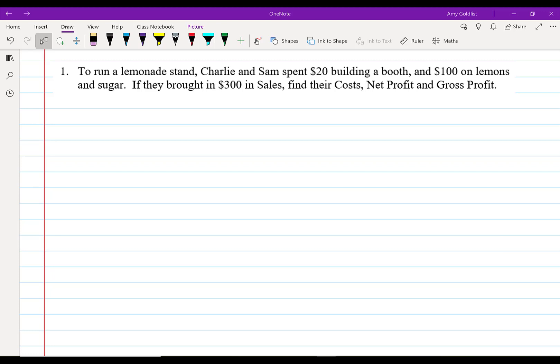To understand the different types of expenses and the different types of profits, we're going to go over an example. Example number one. To run a lemonade stand, Charlie and Sam spent $20 in building a booth and $100 on lemons and sugar. They brought in $300 in sales. Find their cost, net profit and gross profit.